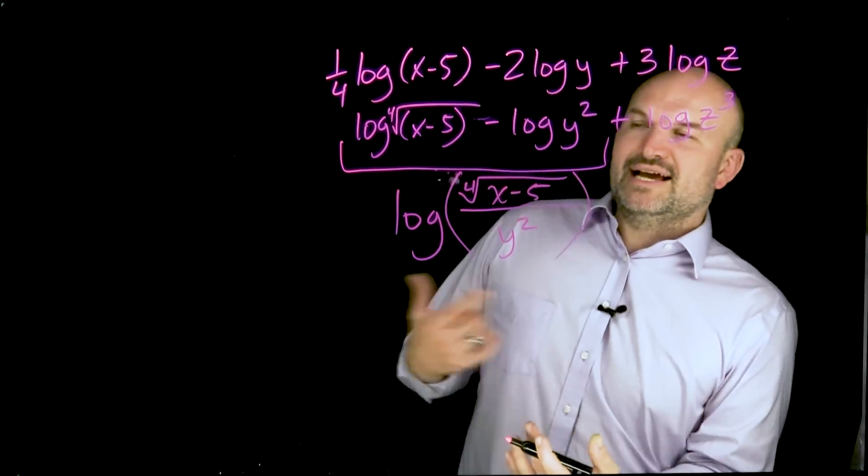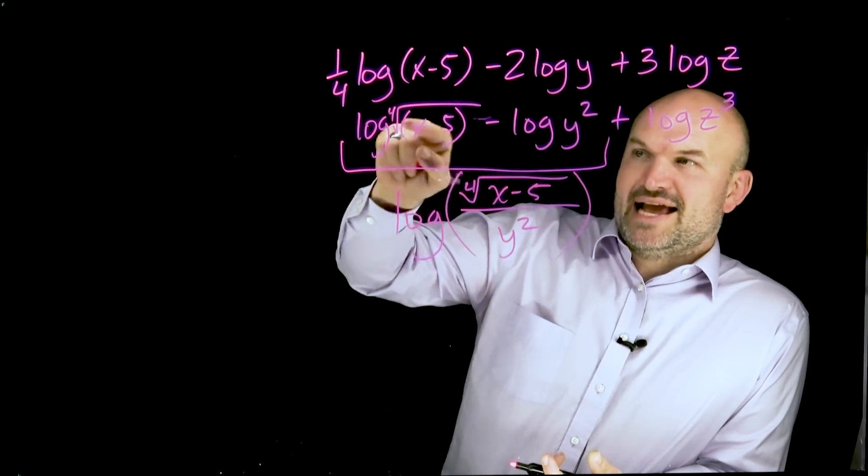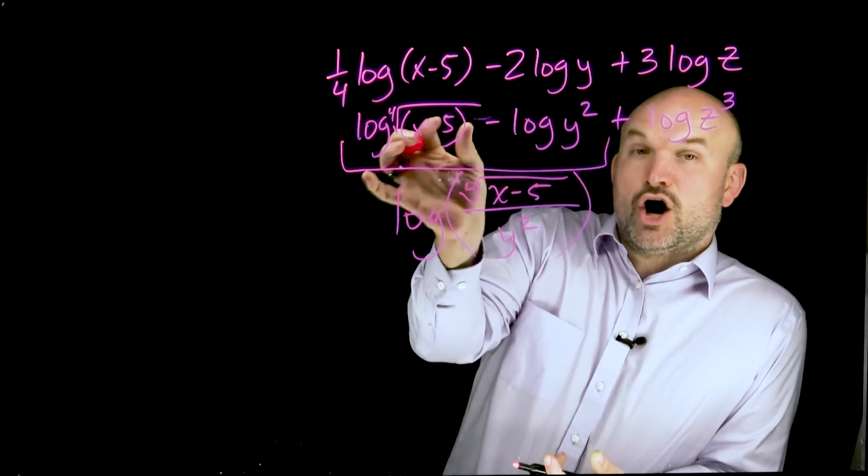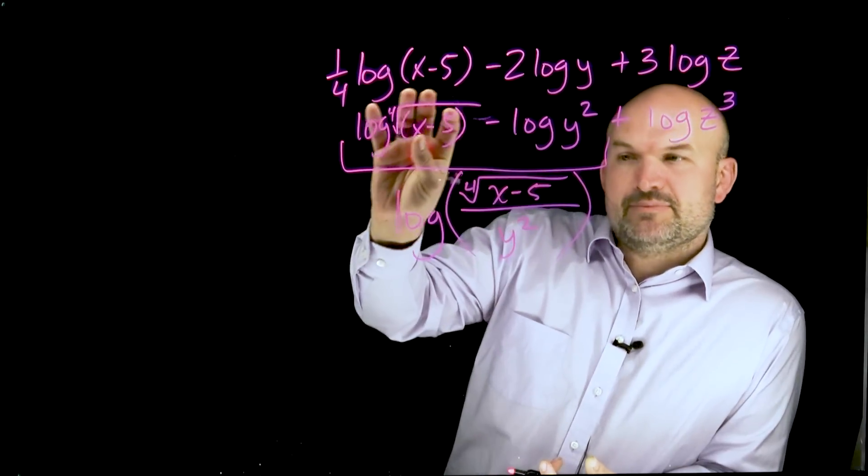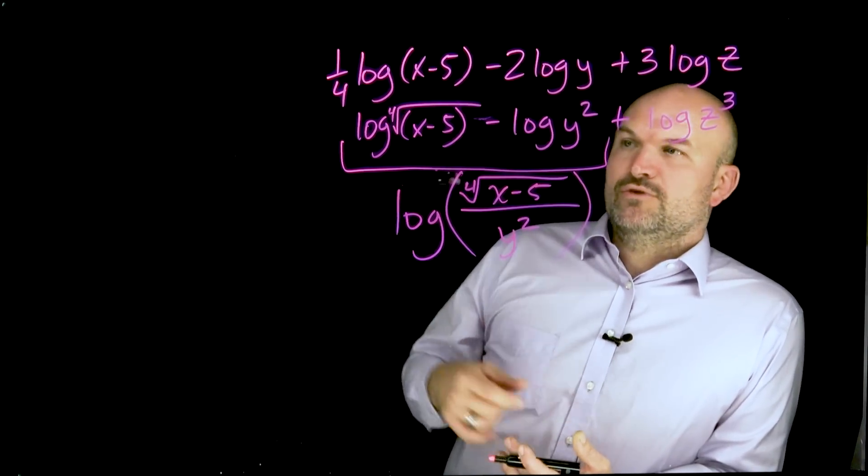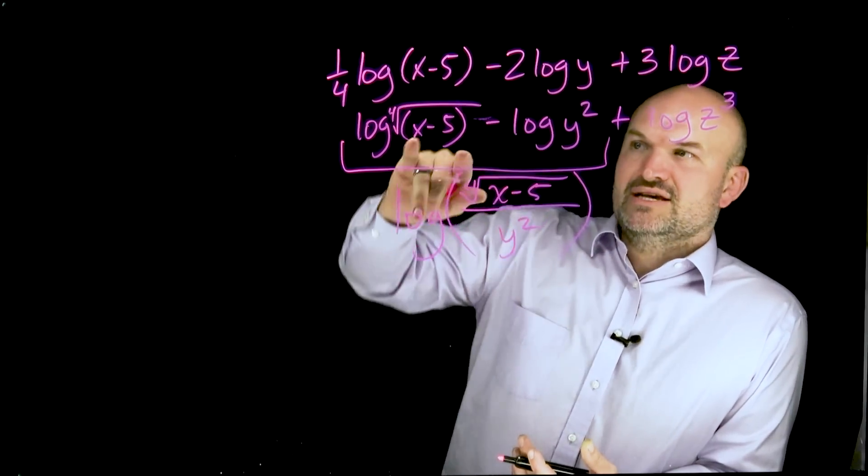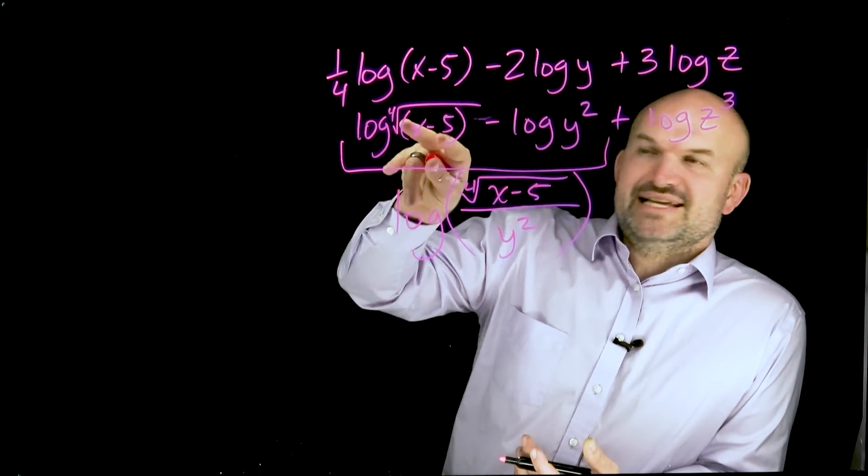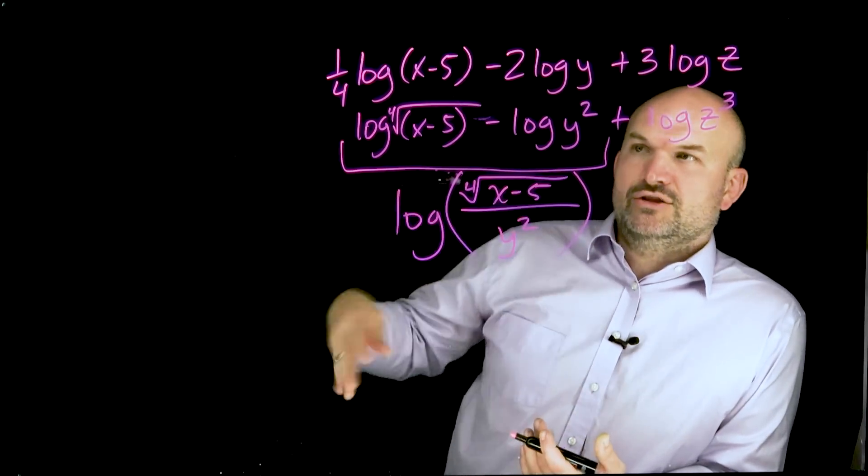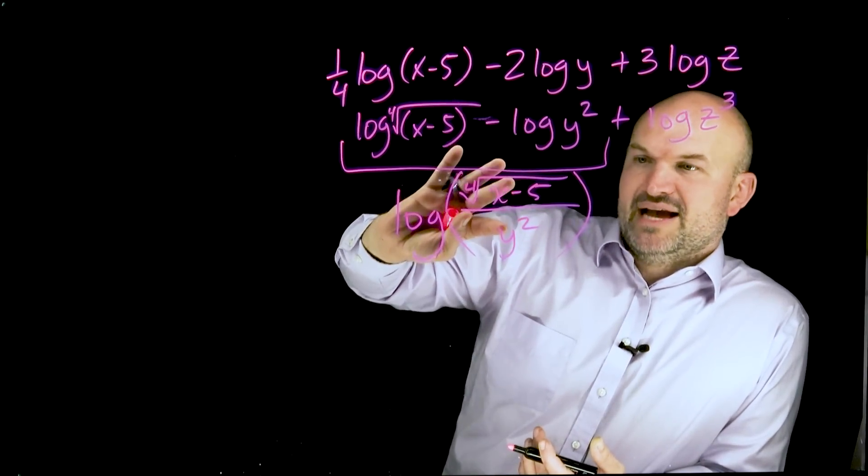So I'm using my parentheses, and it's really important to recognize I cannot distribute the fourth root into my x and my five, right? Because that's the argument of my radical. So I have to keep that preserved. It's also very important that the rules of logarithms only go for when we're taking a logarithm minus another logarithm. It doesn't talk about the subtraction of two terms inside the argument of the logarithm. It's only when you have a logarithm minus another logarithm that you can rewrite them as the quotient.